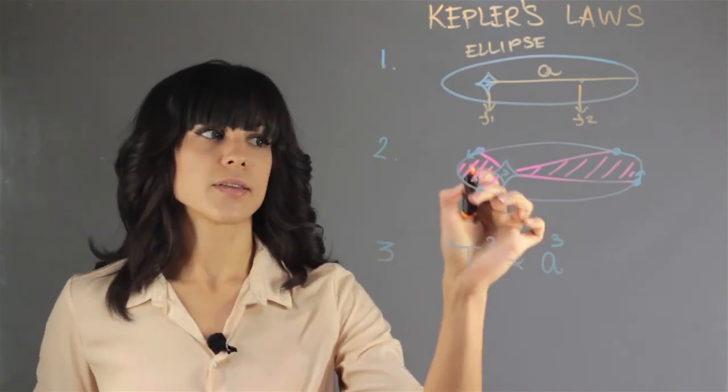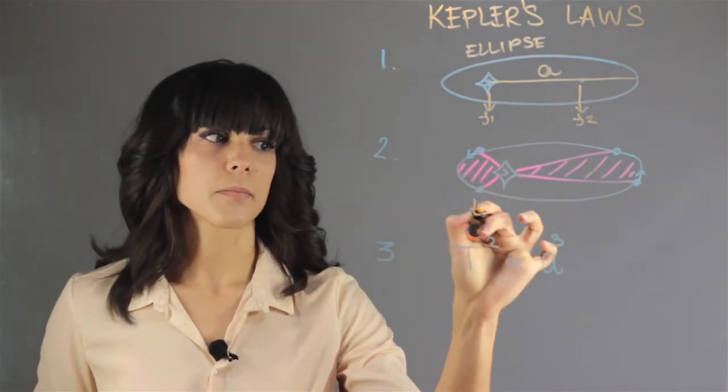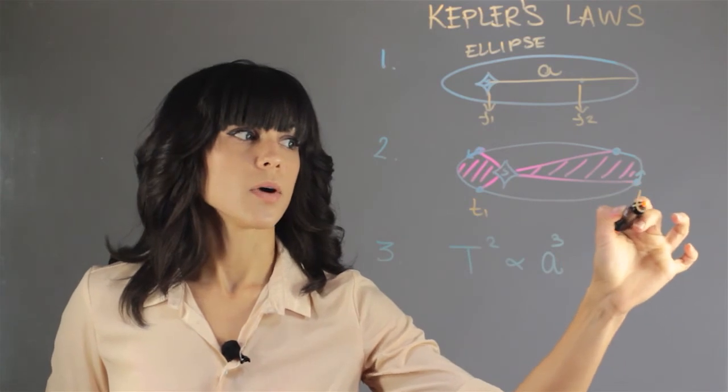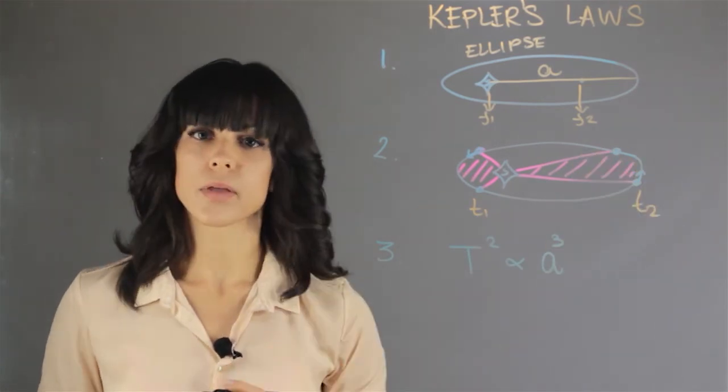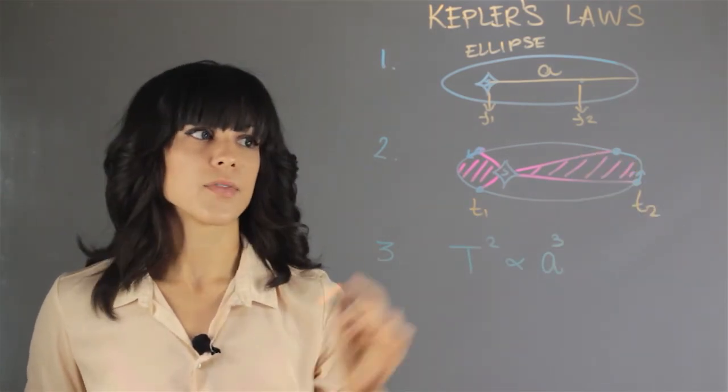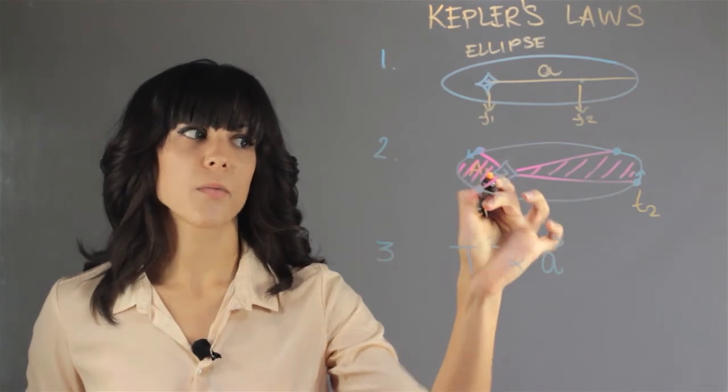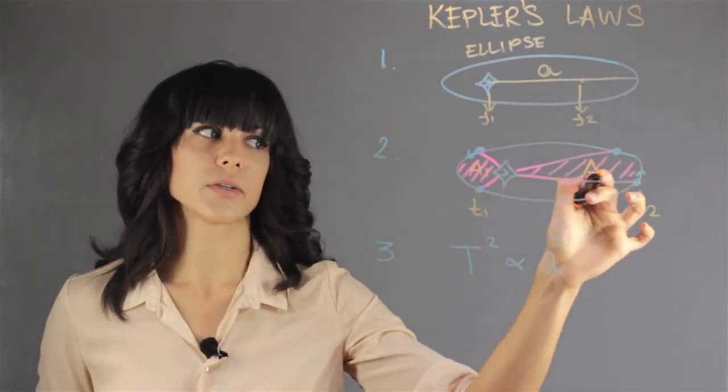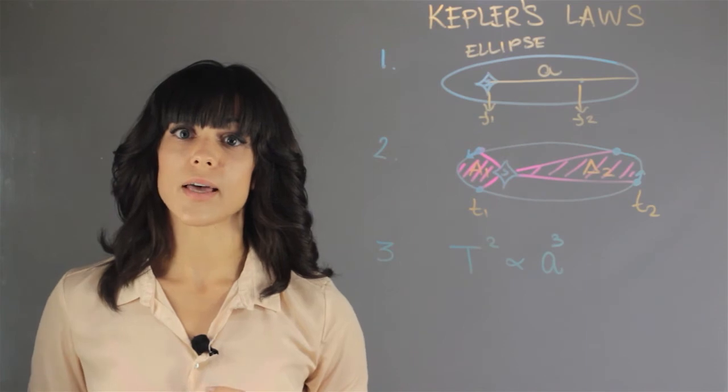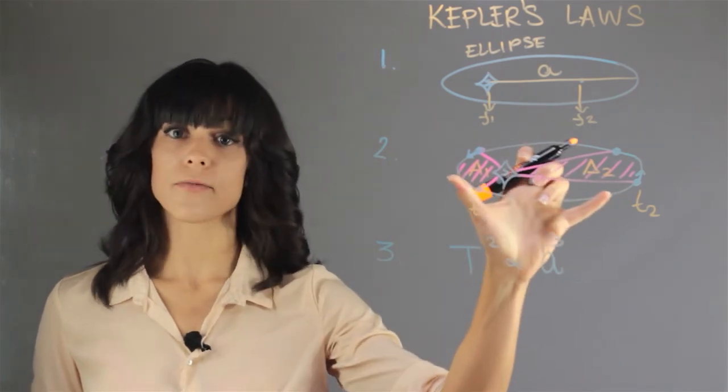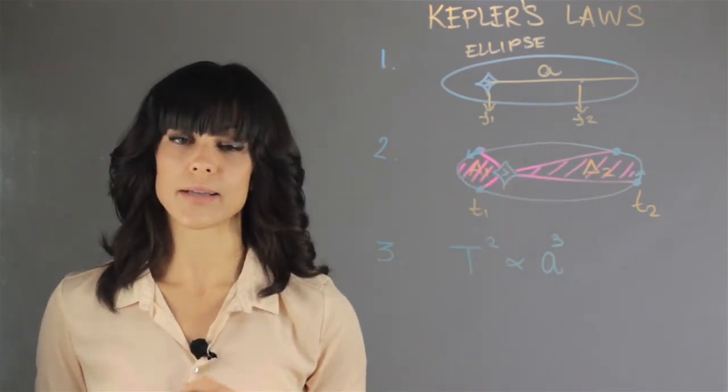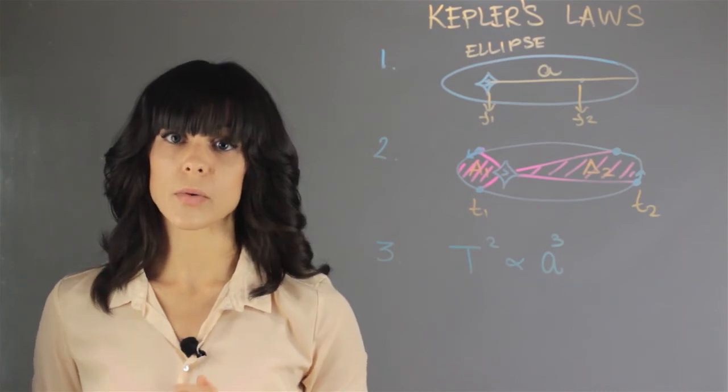The truth is if the time t1 is the same as time t2, then area 1 is equal to area 2. That means if they have the same time frame, they sweep through the exact same area, and that's the equal area law.